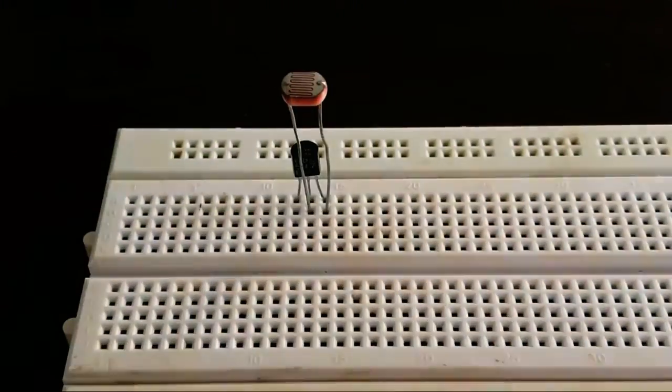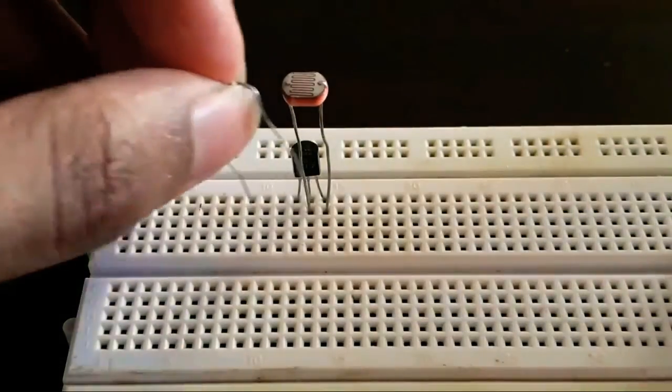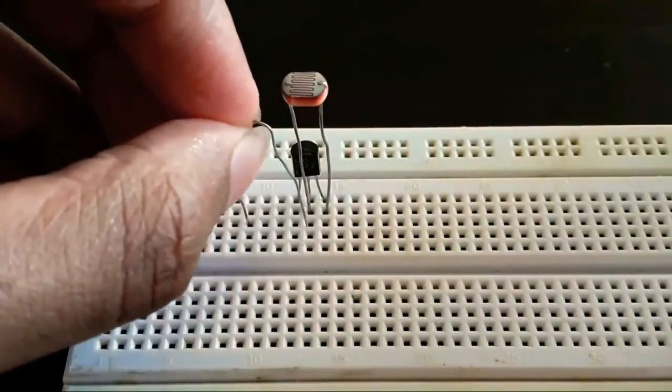Now connect the 100k resistor from the base of the BC507 transistor to a blank space on the breadboard.